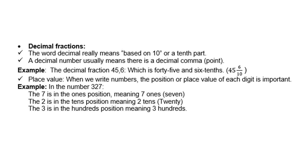Example, in the number 327, the 7 is in the ones position meaning 7 ones or units. The 2 is in the tens position meaning 2 tens or 20. The 3 is in the hundreds position meaning 300.